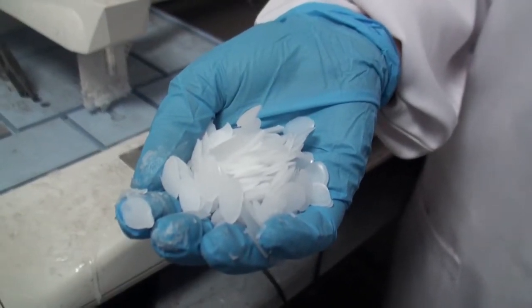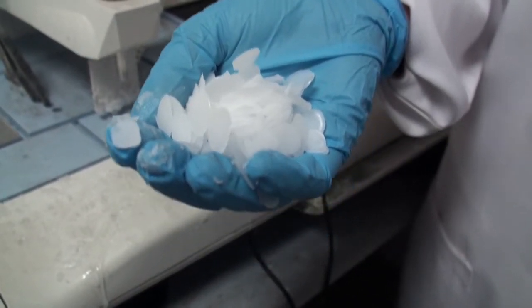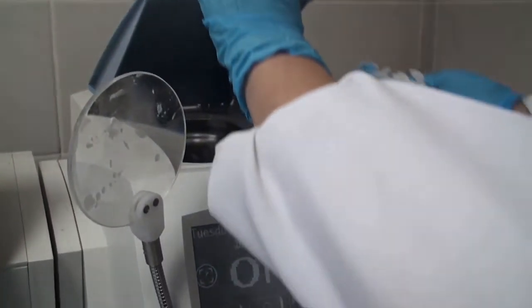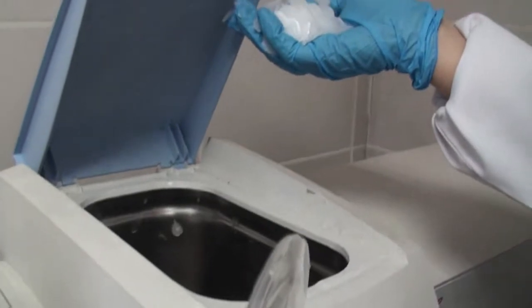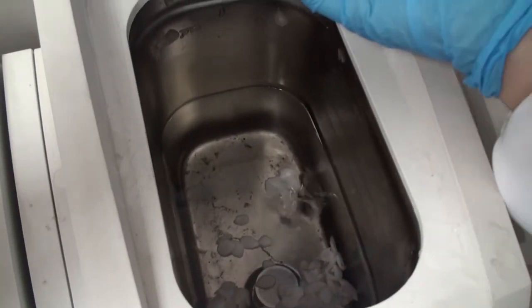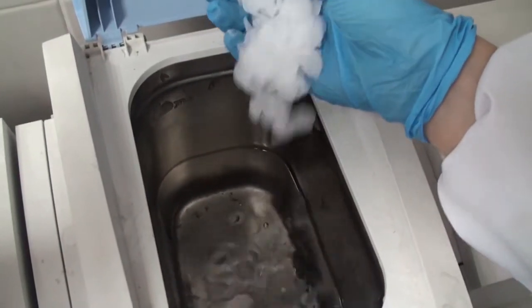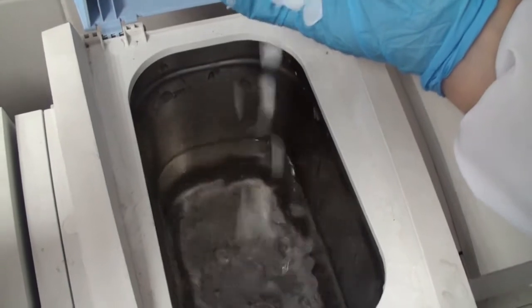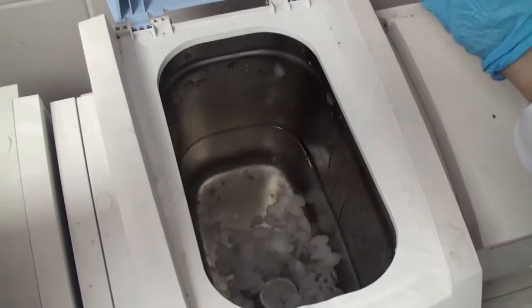This is the wax that we use for embedding as well as infiltration. For the embedding station, we have a reservoir that's heated from the inside. And we put the big chunks of wax, the solid wax in it. And when heated, they will be molten.